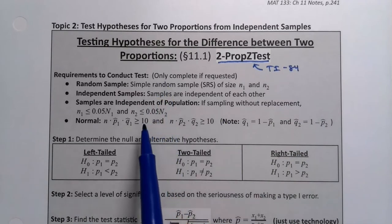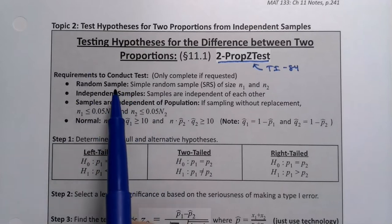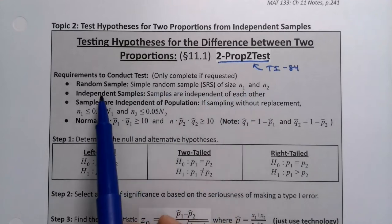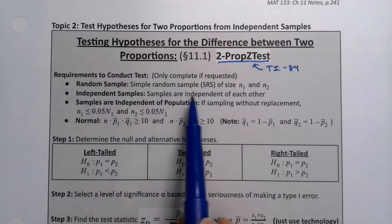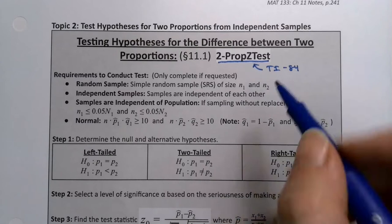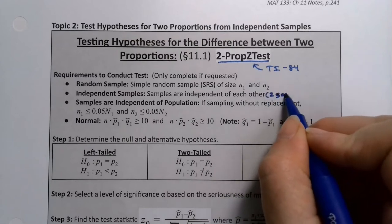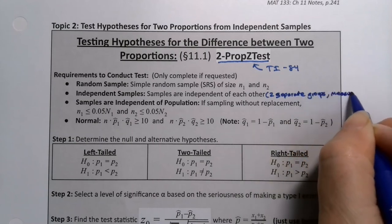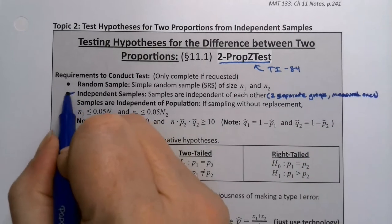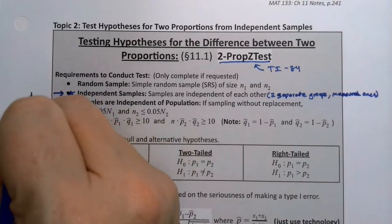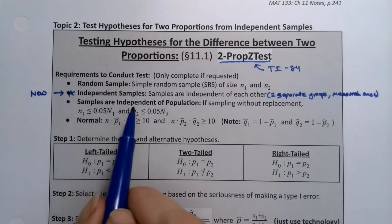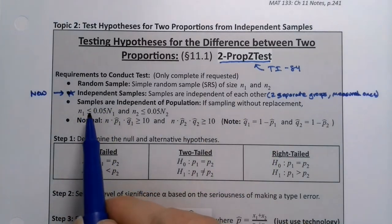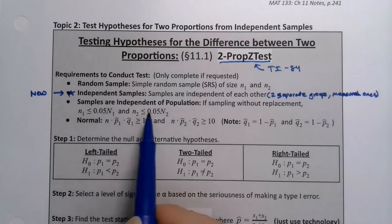Now if you're looking at these requirements, they look familiar, but there's a little bit more to them than before. You still need a random sample from both groups because they need to be independent of each other. You have two separate groups measured once. Also, the samples need to be independent of the population — if sampling without replacement, the sample size must be less than 0.05 (5%) of the population size for both groups.